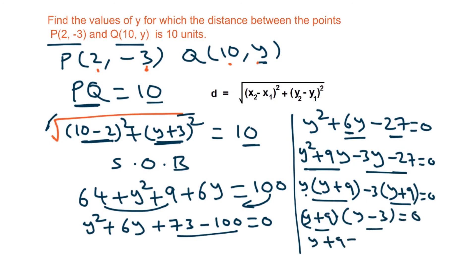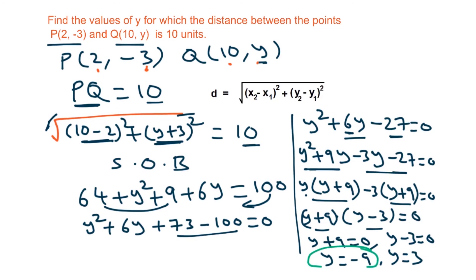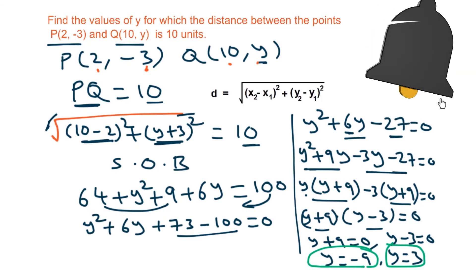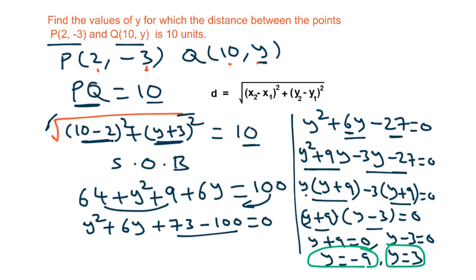Either y plus 9 = 0 or y minus 3 = 0. So y = minus 9 or y = 3. The value of y is either minus 9 or 3.